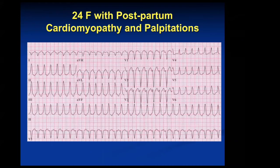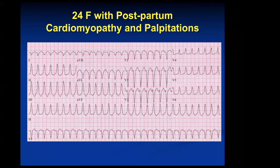A 24-year-old woman with postpartum cardiomyopathy and palpitations. Is this a narrow or wide complex tachycardia? It's wide. Given that history, what's high in your differential? VT — exactly right. Because you have cardiomyopathy with a wide complex tachycardia that's regular, VT is high in your differential. Putting together the fact they have a cardiomyopathy, a regular wide complex tachycardia — that really raises a high index of suspicion for VT.